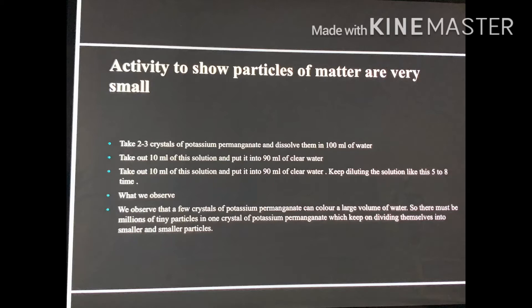Is the water still colored? Yes. This experiment shows that just a few crystals of potassium permanganate can color a large volume of water. We conclude that one crystal of potassium permanganate is made up of millions of very tiny particles which keep on dividing themselves into smaller and smaller particles on dissolving in water, and the color of the solution gets lighter. Therefore, we can say that particles of matter are extremely small in size.